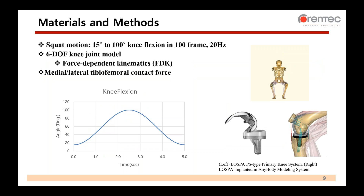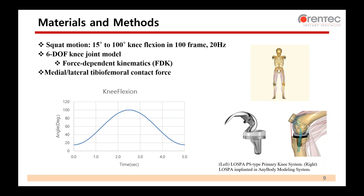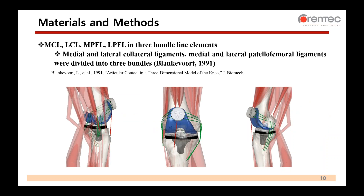To implement squat motion without motion capture data, knee flexion angle was selected as the main independent variable and driven from 15 to 100 degrees. To construct the six-degree-of-freedom knee joint model, the force-dependent kinematics method was used to estimate secondary knee motions. Regarding the TKR contact geometry definitions, the tibial insert component was divided into medial and lateral compartments, so medial and lateral contact forces could be estimated individually. To constrain the six-degree-of-freedom knee joint, medial and lateral collateral ligaments and patellofemoral ligaments were each constructed as three-bundle line elements, with stiffness and reference parameters obtained from the study by Blankevoort.